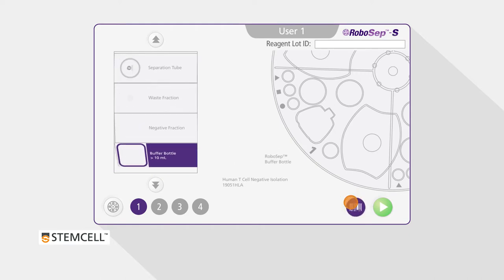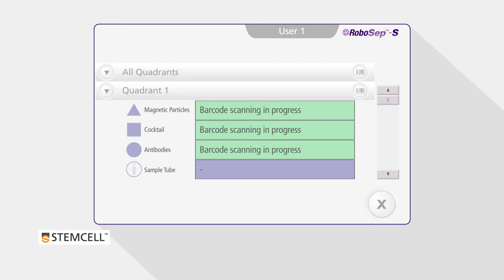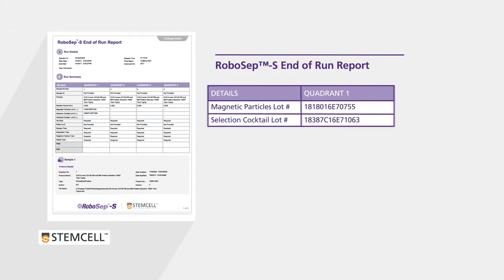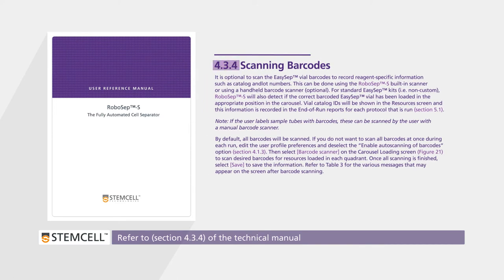Selecting the barcode button on the screen will scan the barcode on each reagent vial, so the instrument can verify the correct reagents have been loaded in the correct locations as per the protocol selected. Scanning the barcodes will also allow reagent-specific information such as catalogue and lot numbers to be recorded in end-of-run reports. For more details regarding the RoboSep-S barcode scanner, refer to Section 4.3.4 in the technical manual.